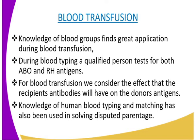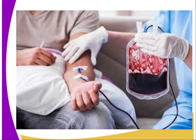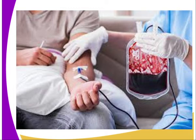The rhesus factor must also be considered before transfusion. Knowledge of human blood typing and matching has also been used in solving disputed parentage. For example, if an unmarried girl gives birth to a child and accuses a well-known politician of being the biological father — the girl has blood group A with genotype AO, and the baby is blood group O — but the accused man has blood group AB. This clearly shows that he cannot be the biological father. In this case, the biological father must be of genotype AO, BO, or OO.